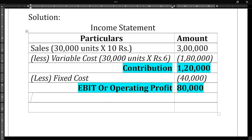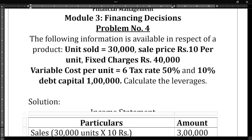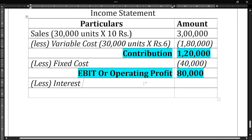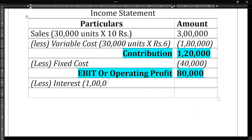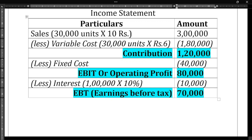From EBIT we reduce interest. Debt capital is ₹1 lakh rupees at 10% interest, so interest is ₹1,00,000 × 10% = ₹10,000. Deducting interest from EBIT gives us EBT — earnings before tax — which is ₹80,000 − ₹10,000 = ₹70,000.